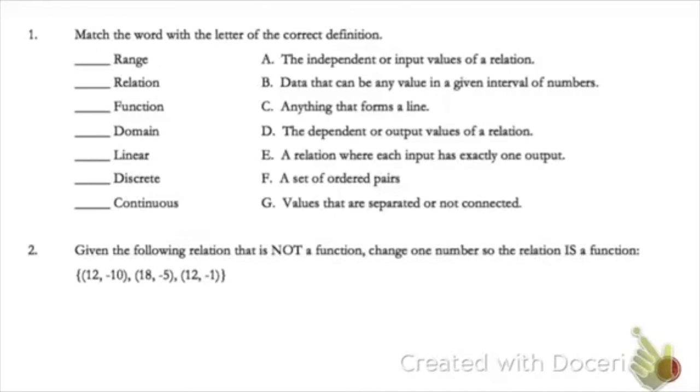So let's start with range. Normally we think of domain and range together as a pair. We know that the domain is the input, so I look at my choices here and I see A says the independent or the input values. Range is the other part of that. It is the output. So I'm scanning and D says the dependent or the output values. I'll mark that as D.